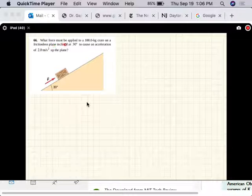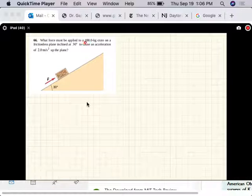Okay, this problem says what force must be applied to a hundred kilogram crate on a frictionless plane inclined at 30 degrees to cause an acceleration of two meters per second squared up the plane. So what you want is an acceleration of two meters per second squared in that direction.